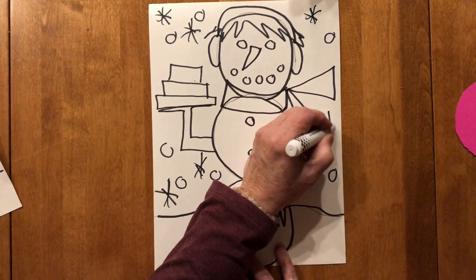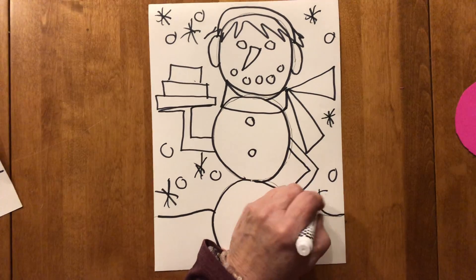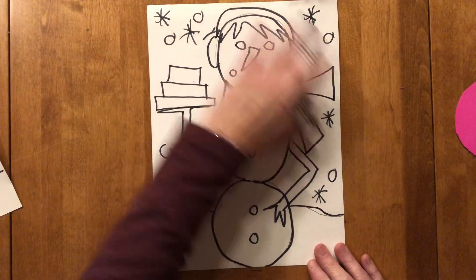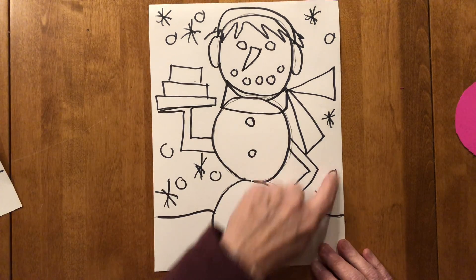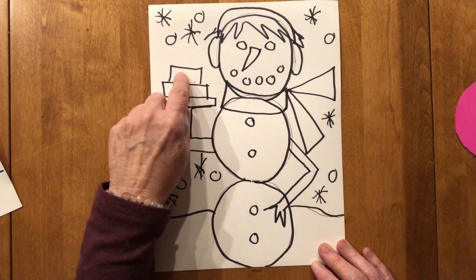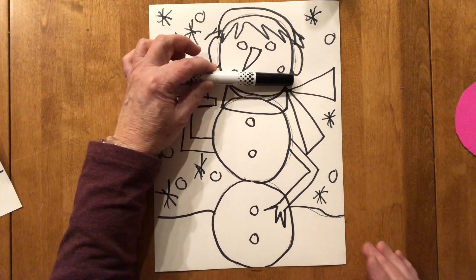Okay, so then you're going to find your black marker in your supply caddy and you're going to outline all of your snow people, your snow person and your snowflakes. And what their job is with your black marker.